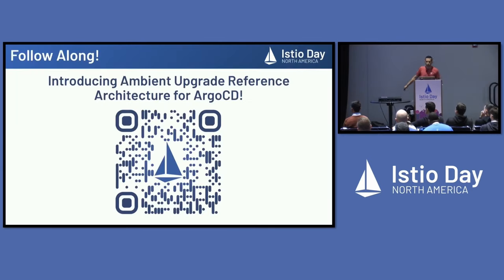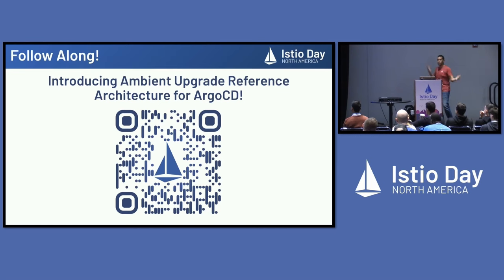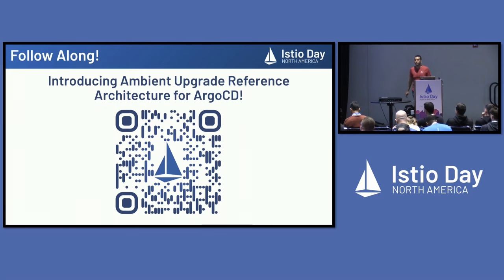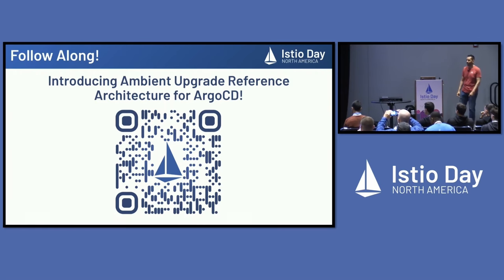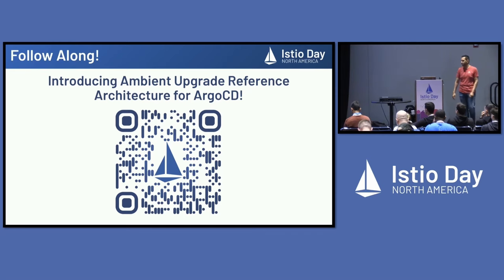This isn't just a story or use case — we actually built something you can use. You can go ahead and scan the QR code and use it as a reference architecture. This will actually point you to the Istio repository. This is our reference architecture that we're going to be showing off today. You can pull it down from Istio, make use of it yourselves, and follow along in the code we're going to be using.